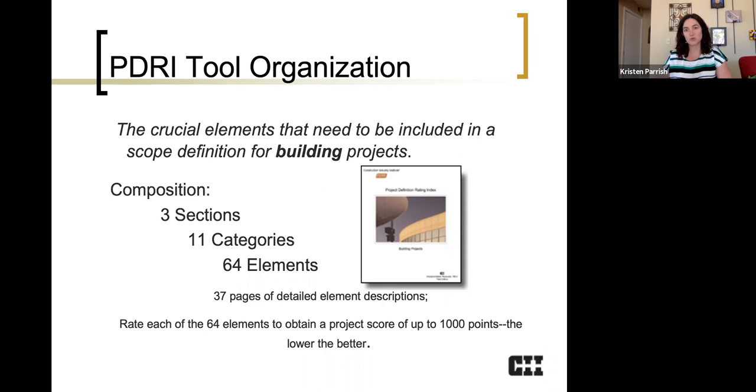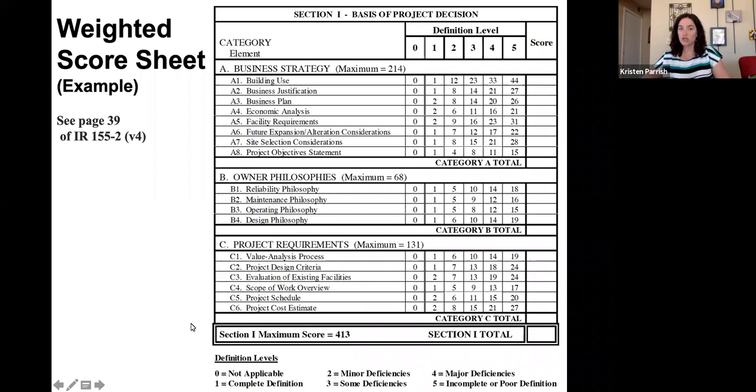So just to give an example of what a score sheet would look like, this is section one, basis of project decision. This is what the scoring would be for a building project. So you can see you have the section listed here. You have the categories broken out. In this case, it's A, B, and C. And then within each of these categories have a set of elements, and every single element has its own weights.